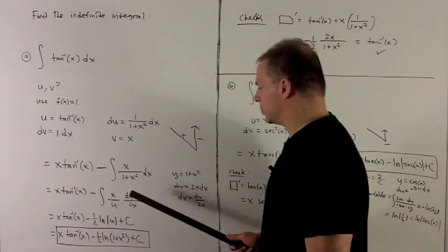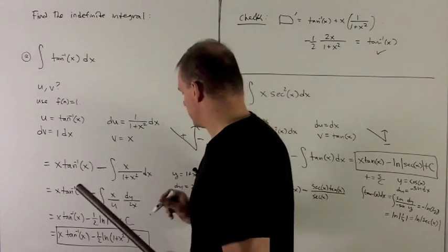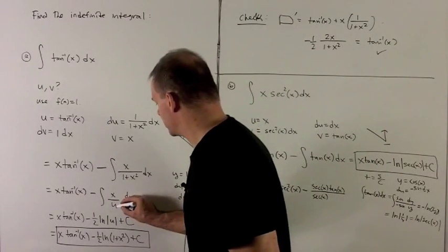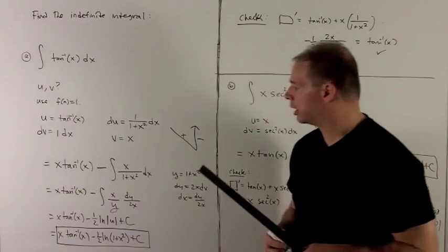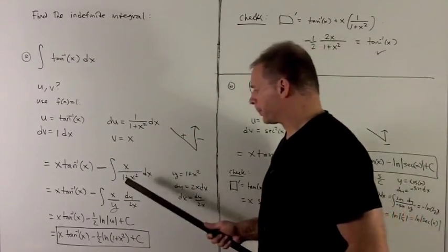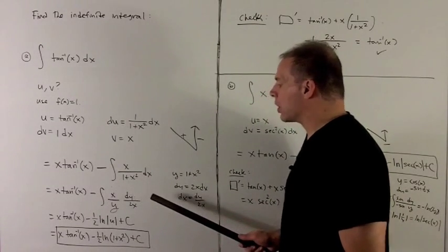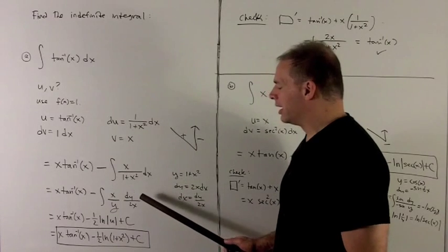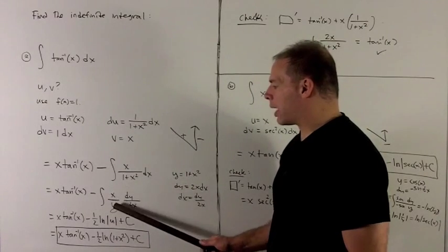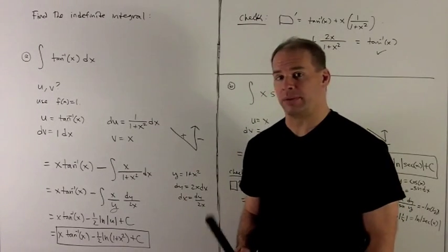We substitute in. So we're going to have, make that a y since we're using y now. That's going to give me x over y. Then dx turns into dy over 2x. So the x's go away, the half goes in front, and I'm just left with dy over y.